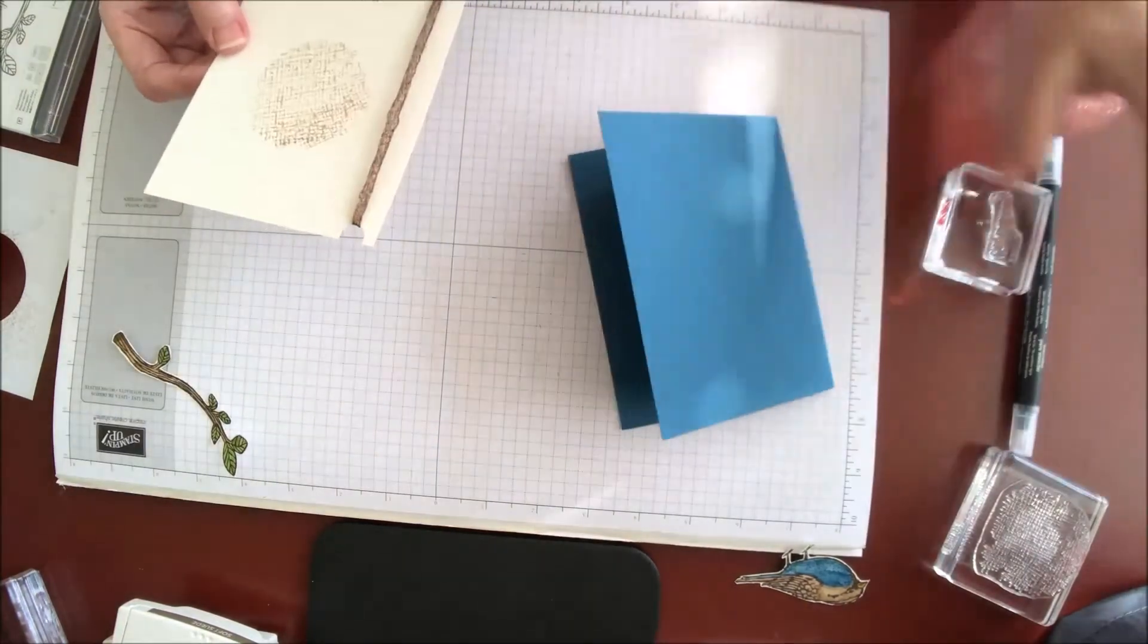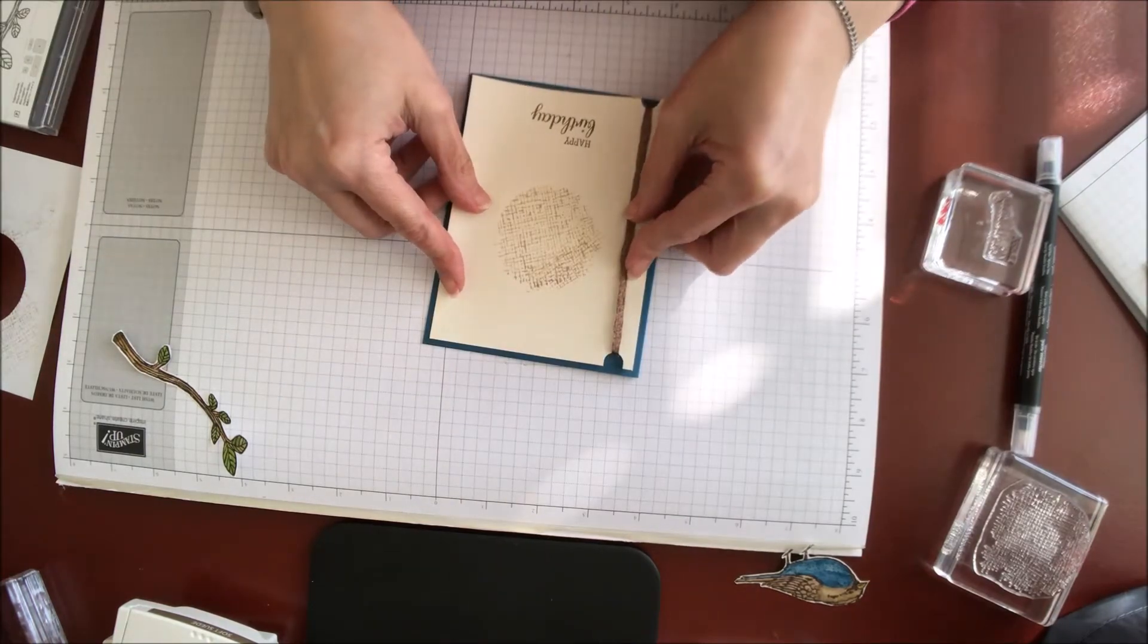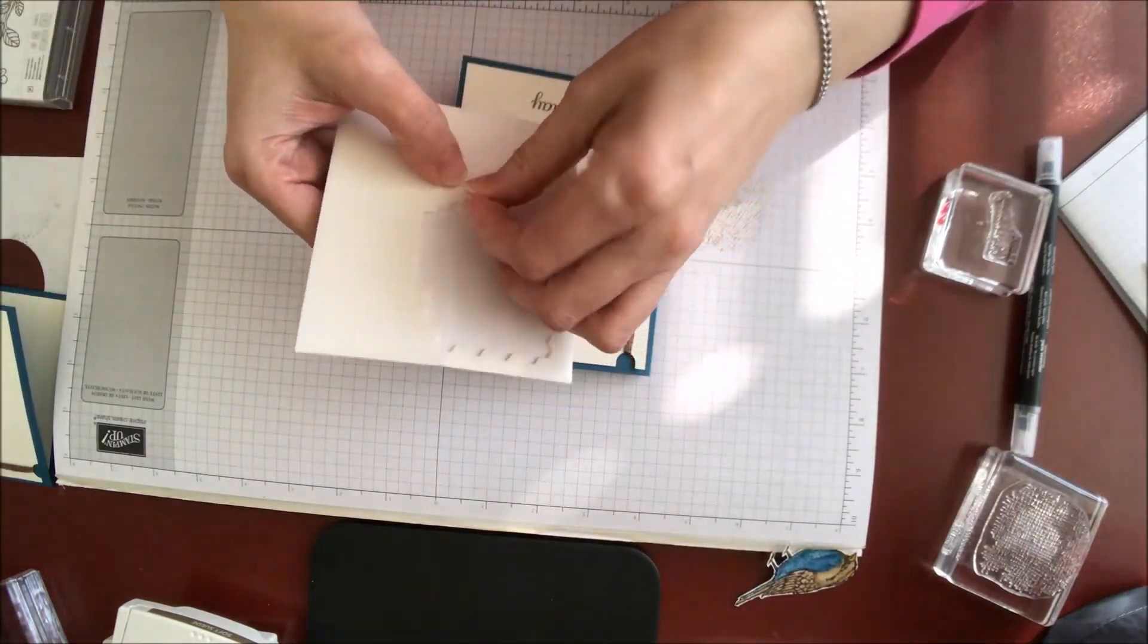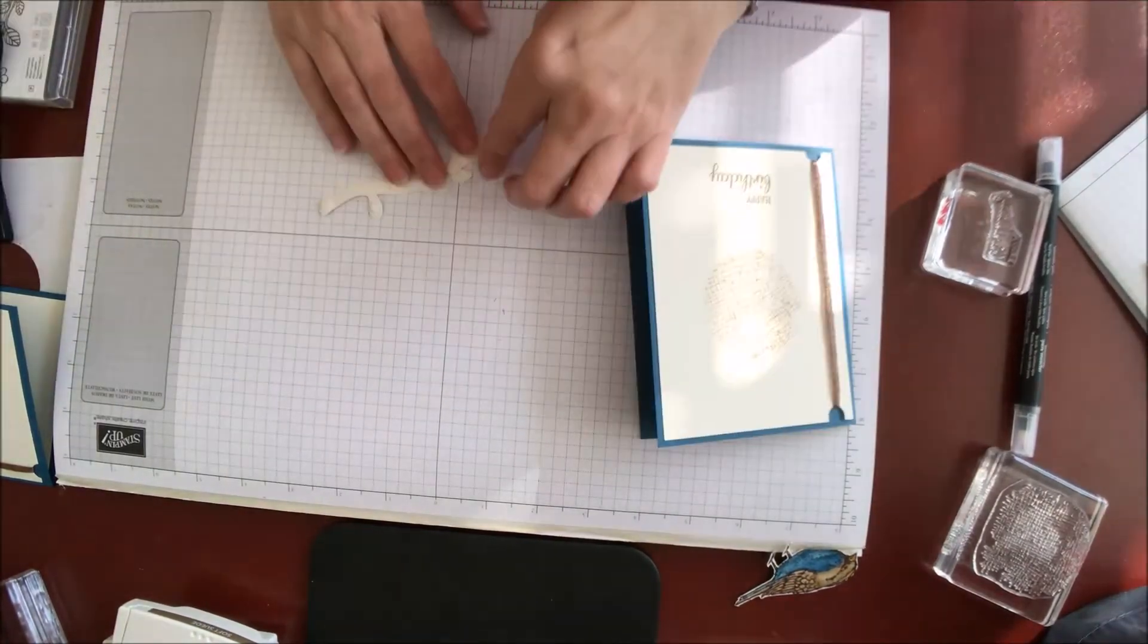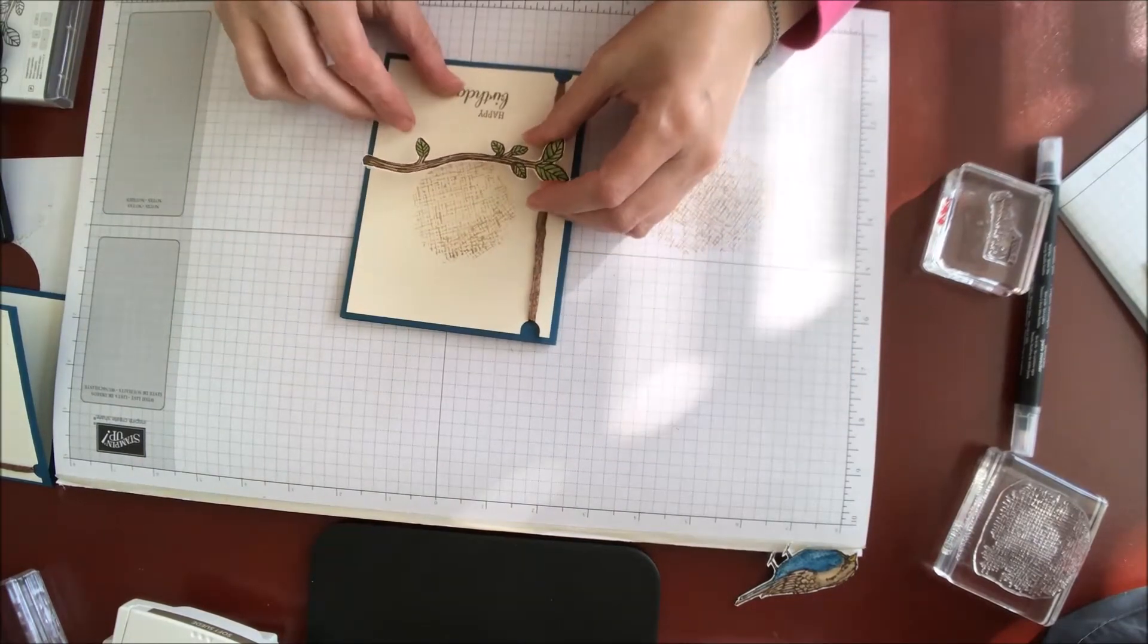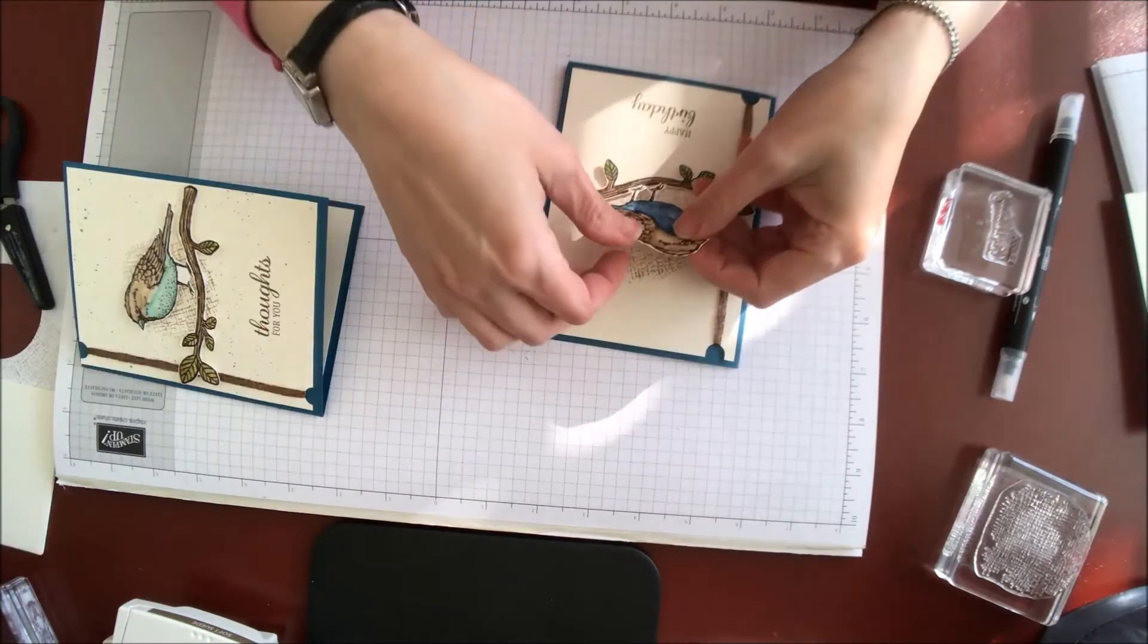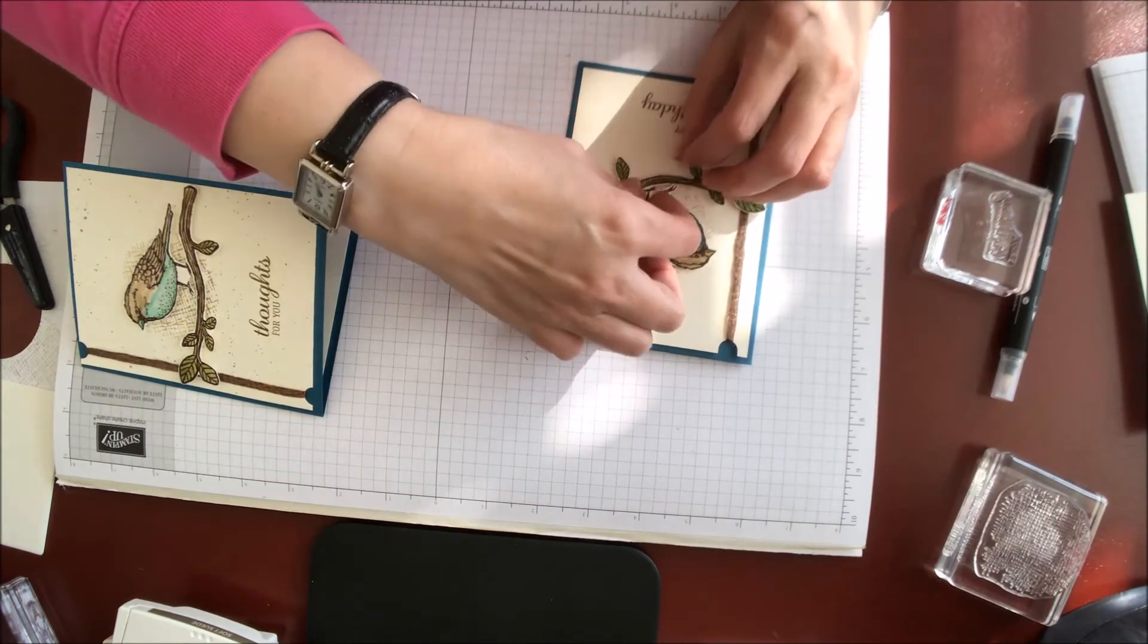So let's go ahead and adhere this to the base of our card. Next, I'm going to take the tree branch here. These are the mini dimensionals, and I'm going to just place some mini dimensionals on the back. I'm going to peel the paper backings off. Now I'm just going to place my branch wherever I want it. So we're just going to put some dimensionals on the back of this bird. Then I'm just going to place him to look like he's kind of standing on that limb.